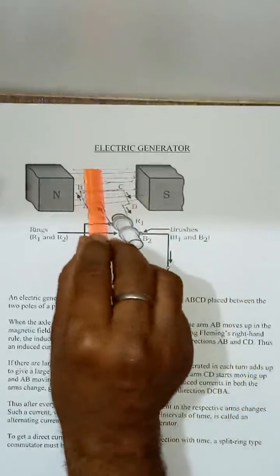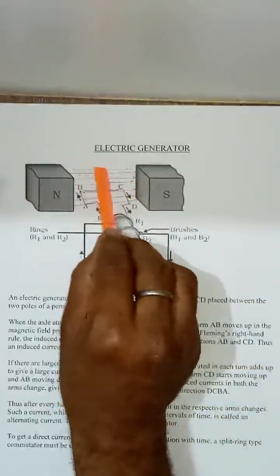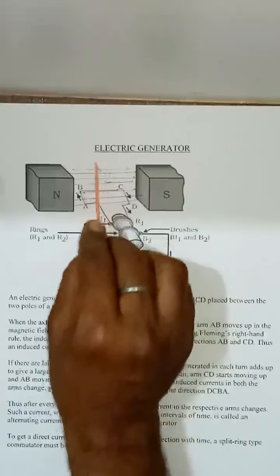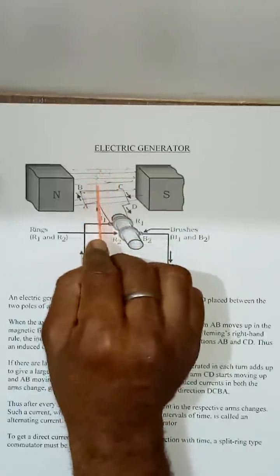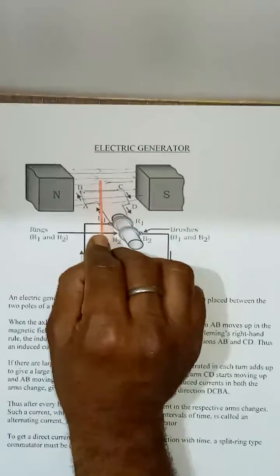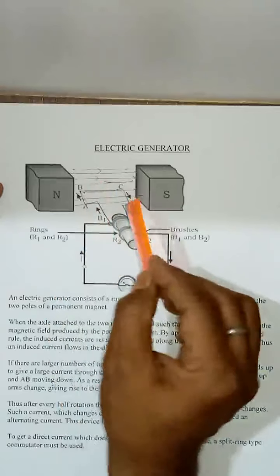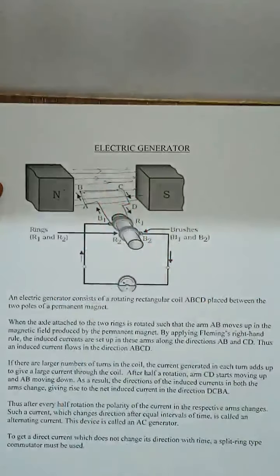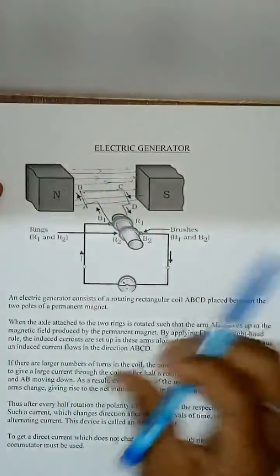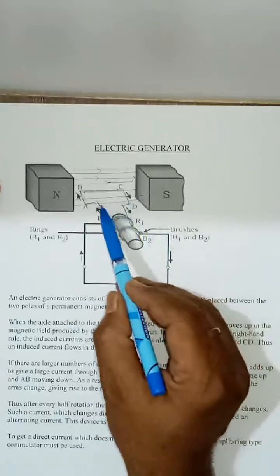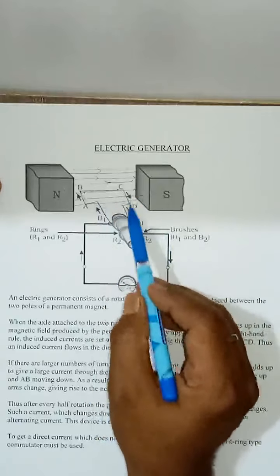When this coil rotates in between the field, cutting of this field leads to change of flux, and hence induced current is produced within this coil. This is the basic phenomenon, the basic principle here in electromagnetic induction. This sort of coil is connected with split rings.